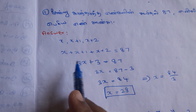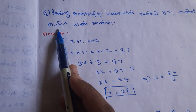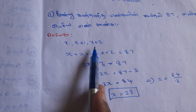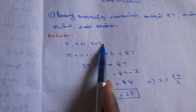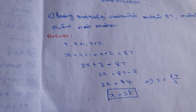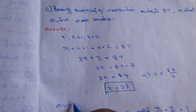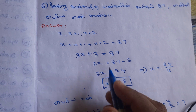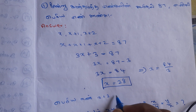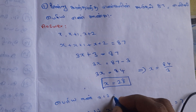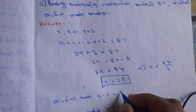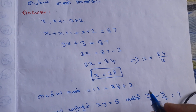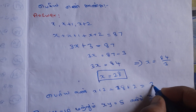So the value of x is 28. Now we apply this to x plus 2: 28 plus 2 equals 30. That is the value of x plus 2.